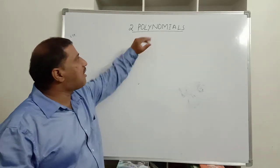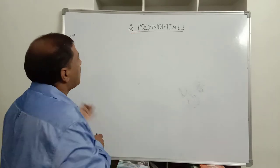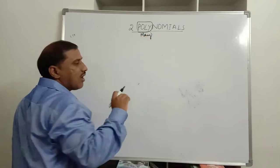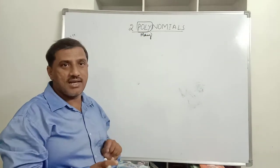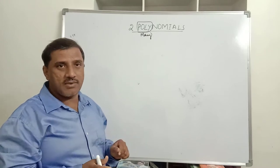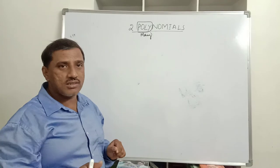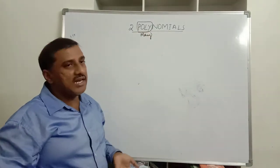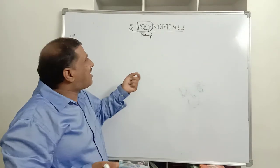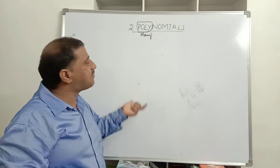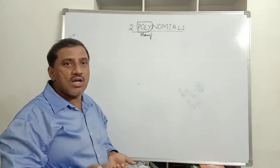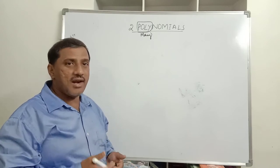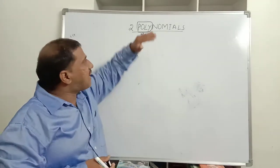The word 'poly' means 'many.' You've come across this in chemistry — polymers; in geometry — polygons; and here in mathematics — polynomials. Polynomials are algebraic expressions. An algebraic expression which contains one or more than one term is known as a polynomial.